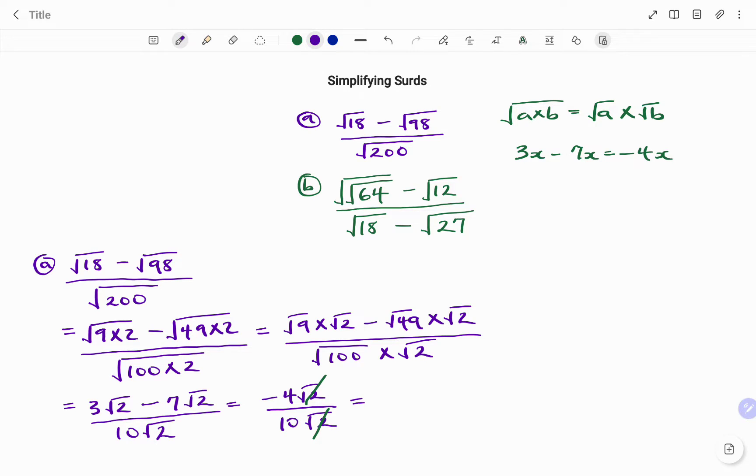I'll simplify further. Negative 4 over 10, dividing both the numerator and the denominator by 2, I have negative 2 over 5.